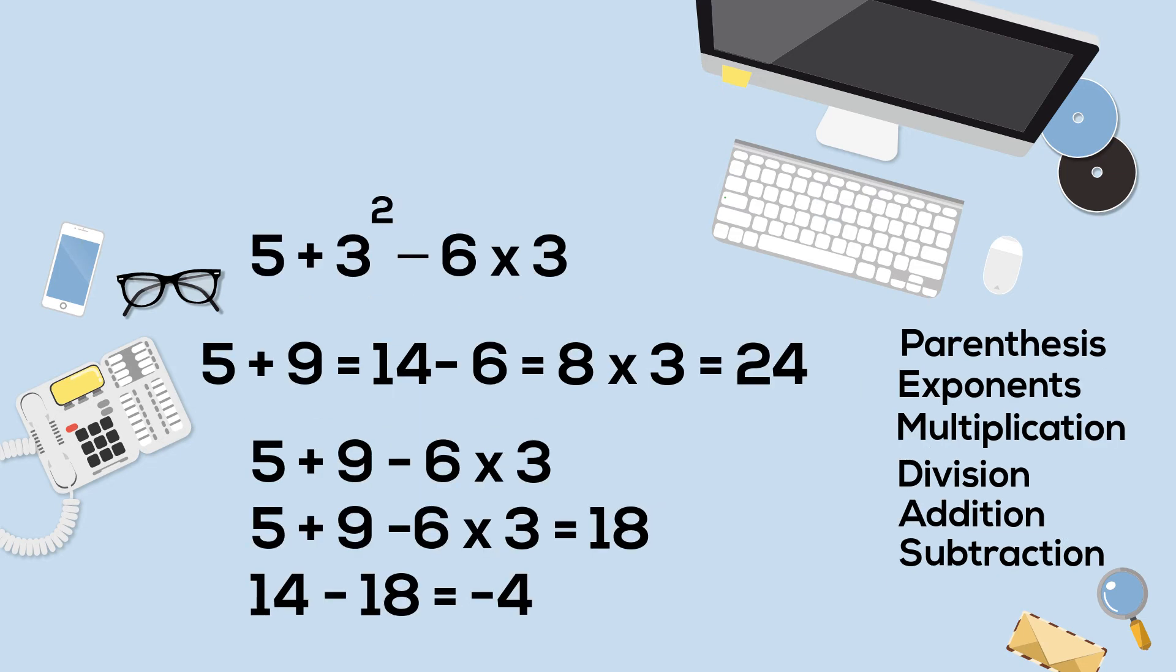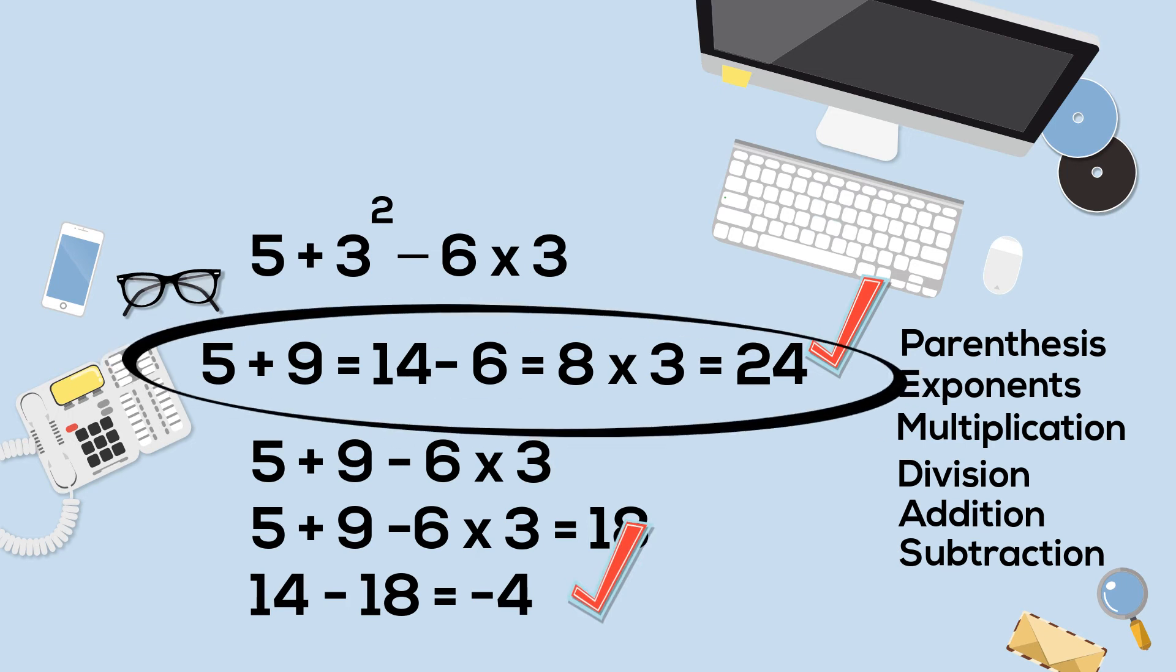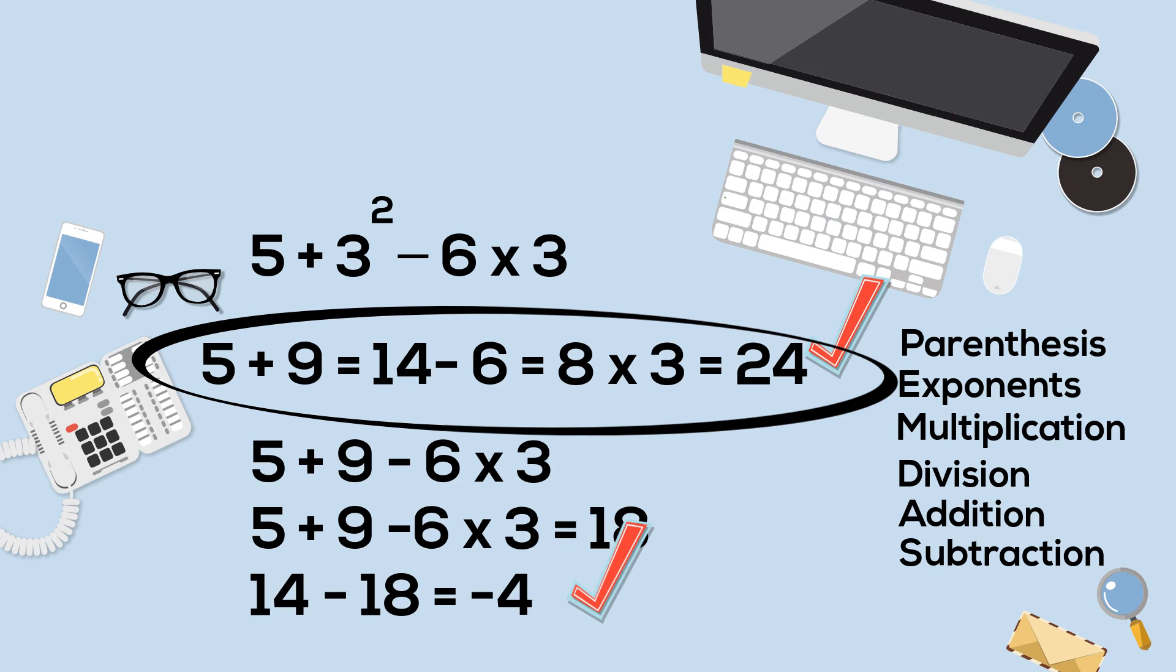Finally, let's look at an expression with an exponent. Which answer is correct, 24 or negative 4? Going left to right, 5 plus 9 equals 14, because 3 squared is 9, minus 6 equals 8, times 3 equals 24.